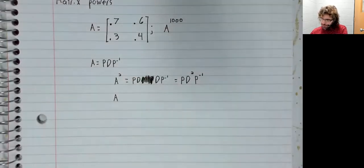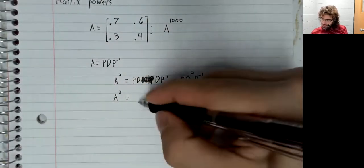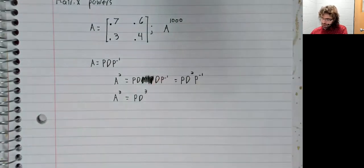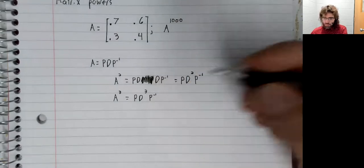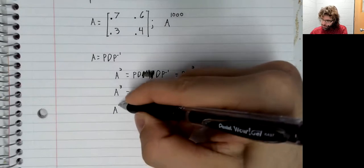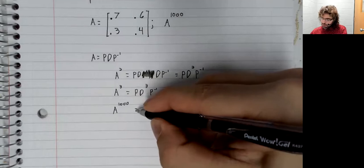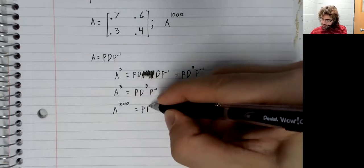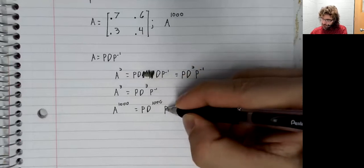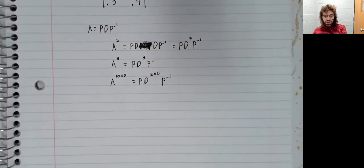And similarly, if we cube A, we wind up with D cubed. And so on. A to the 1000th power is P times D to the 1000th power times P inverse.